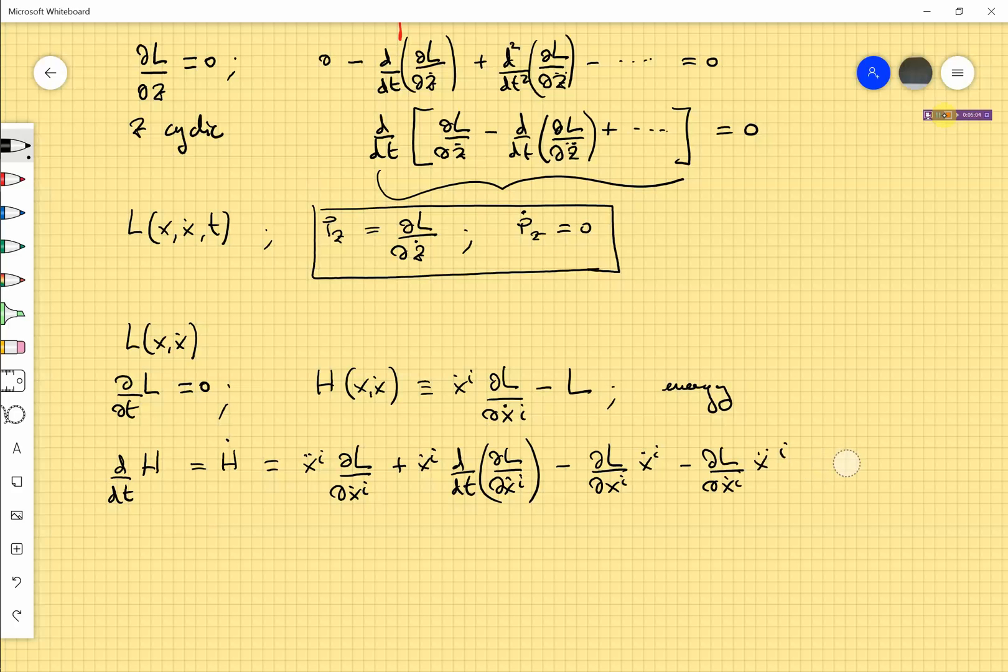Because the last term, which would be in this total derivative, would be the partial derivative of L with respect to t, and by assumption this is zero.